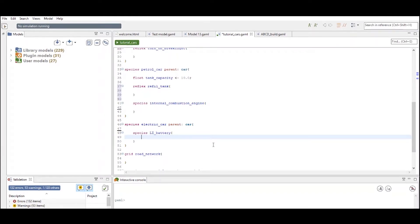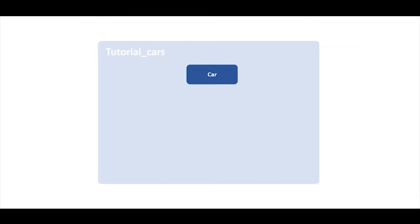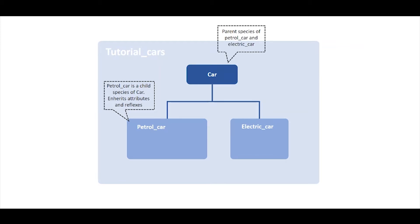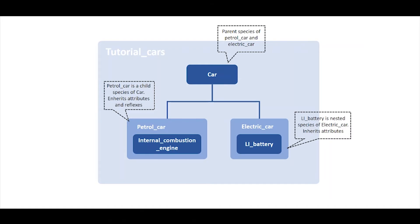To clarify this a little bit more, here is a diagram. We created a model called tutorial cars and defined a car species that is the parent species of petrol car and electric car. The petrol car is a child species of car and inherits attributes and reflexes from car. We created a nested species — internal combustion engine inside petrol car and lithium ion battery inside electric car. Those nested species inherit only attributes, and the electric car is called the host species of the lithium ion battery.